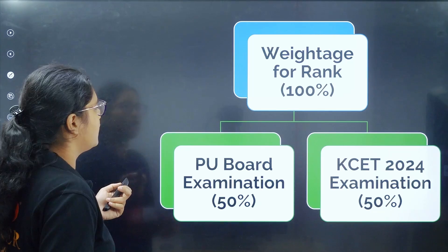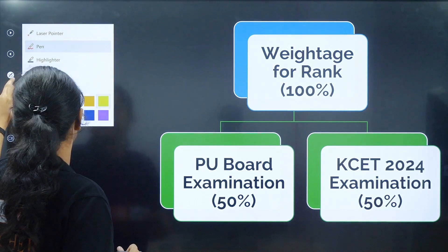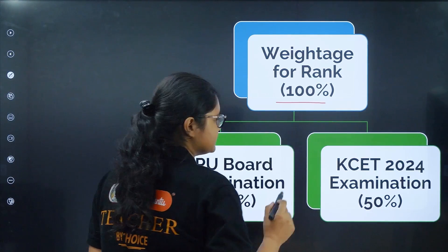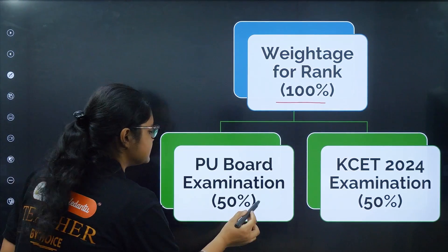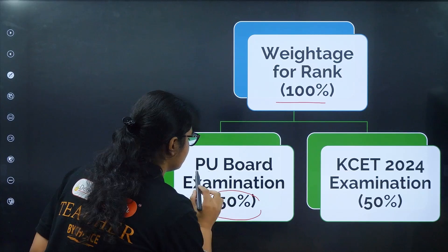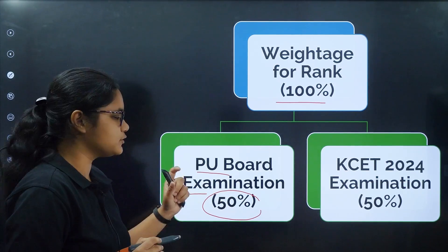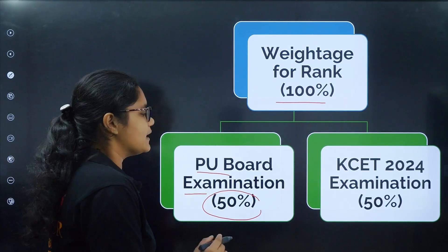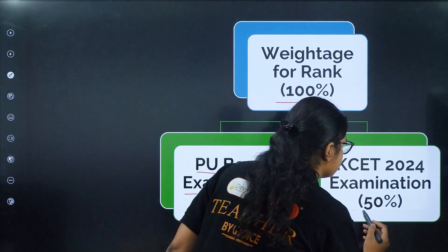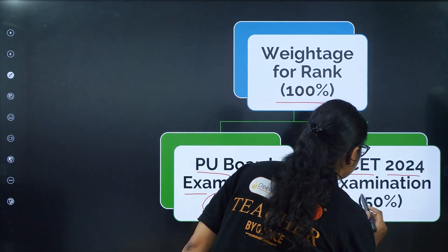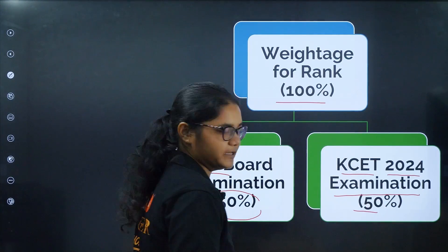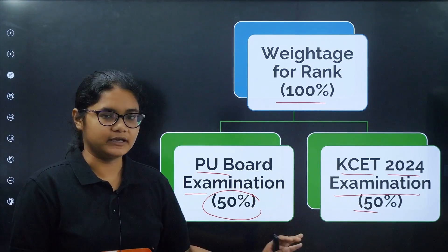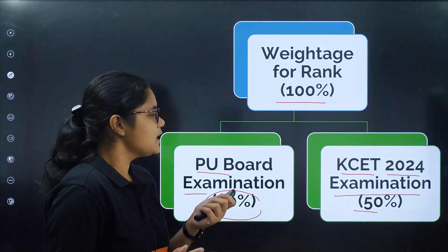Now let us see the weightage for rank. If the total weightage is 100%, then 50% is taken from your PU board examination — that is your qualifying examination, which is your 12th board. And the remaining 50% is taken from the KCET 2024 examination. So 50% from each. Let us see how it is calculated.